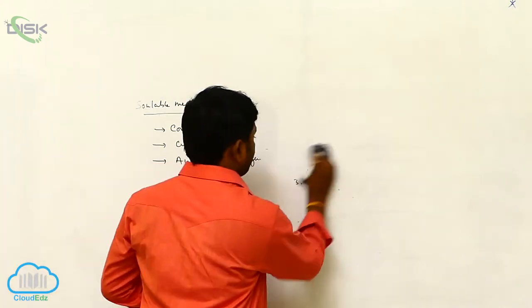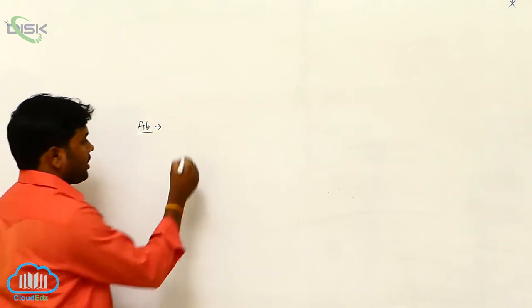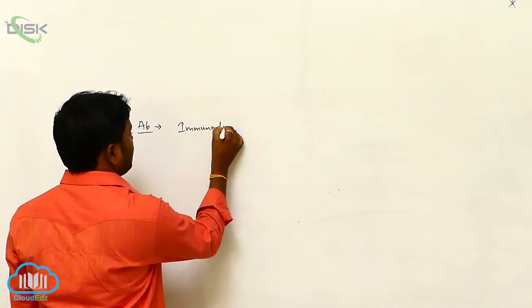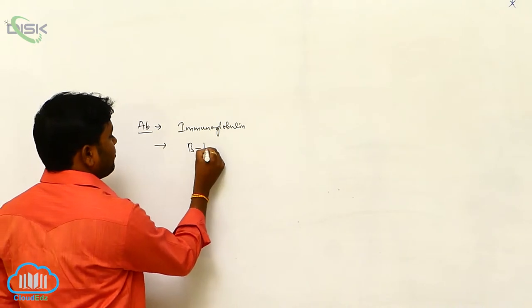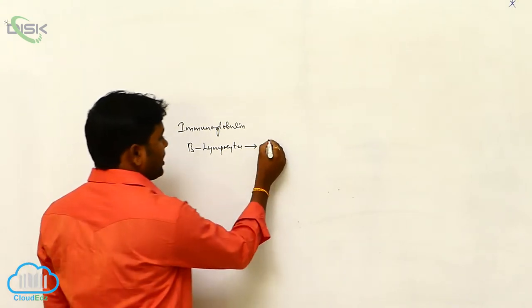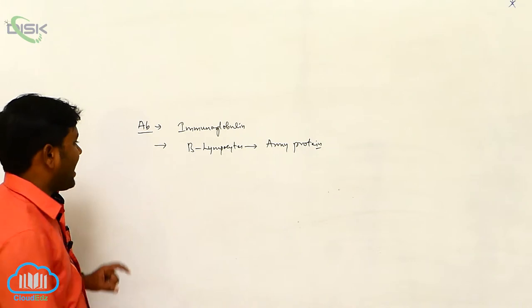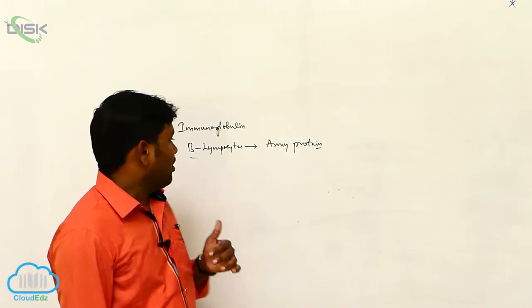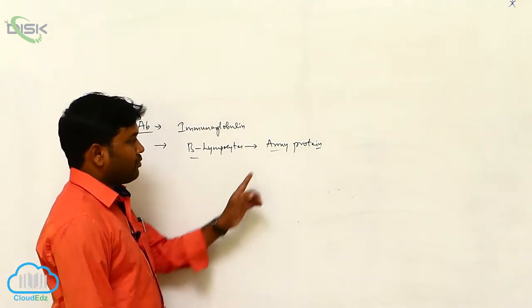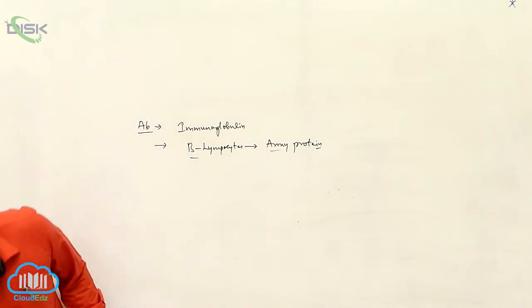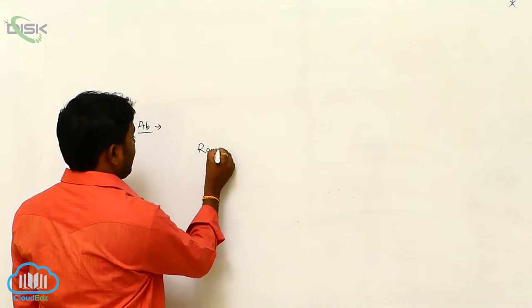Let's see the antibodies. The antibody is also called immunoglobulin. When the pathogen enters the body, the B-lymphocytes immediately produce an army of proteins, which are called antibodies. The major concept of the antibody was proposed by Rodney Porter.